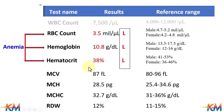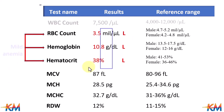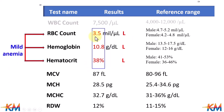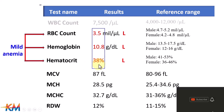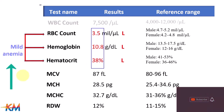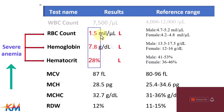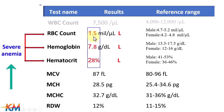Anemia degree is evaluated by the level of decrease or drop in the aforementioned parameters. If there is a slight drop, anemia is mild. But if you have a high drop, the anemia is acute or severe and requires medical attention right away.